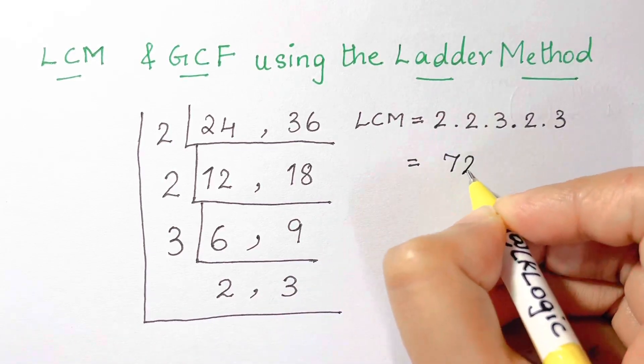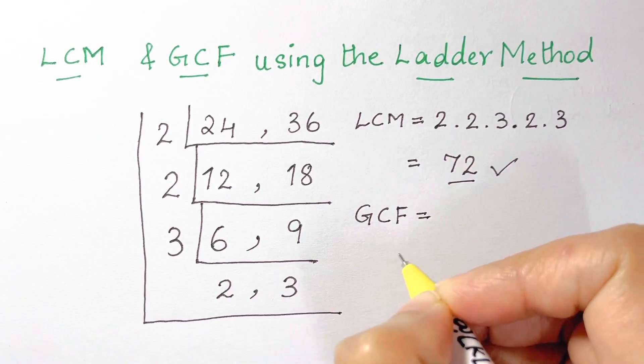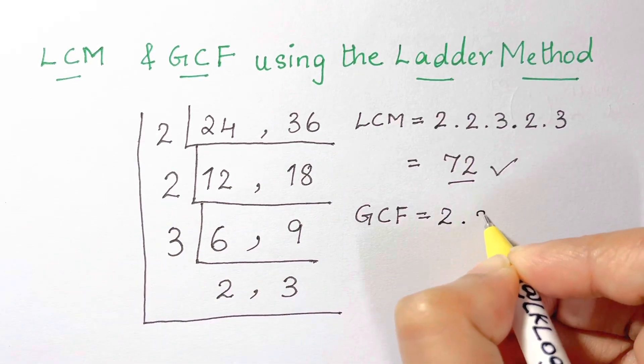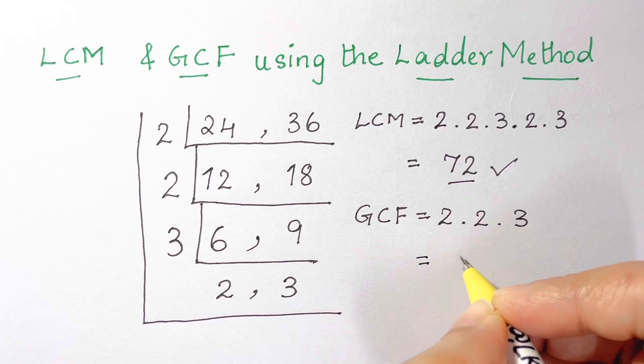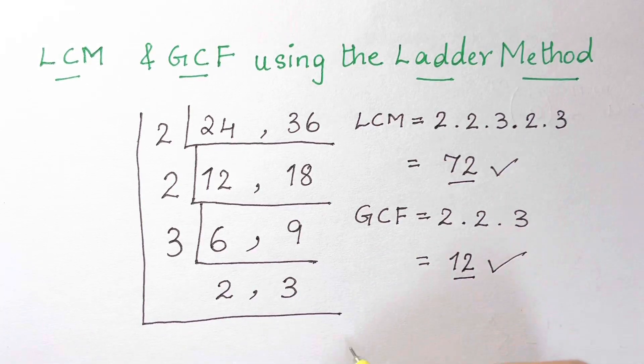The GCF is the greatest common factor. You find by going straight down this line. That's going to be 2 times 2 times 3. And 2 times 2 is 4, 4 times 3 is 12. So the greatest common factor, GCF, is 12.